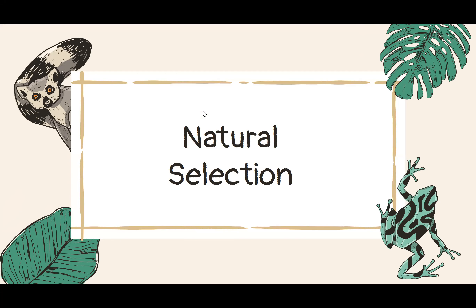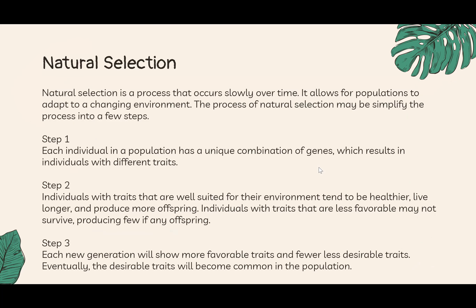Now we're moving on to natural selection in more depth. Natural selection is a process that occurs slowly over time, allowing populations to adapt and mutate due to their environment. The process can be simplified into three main steps.